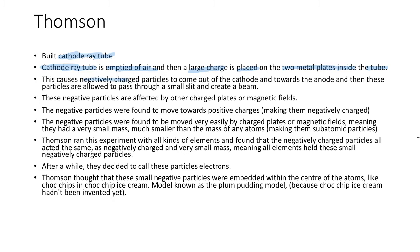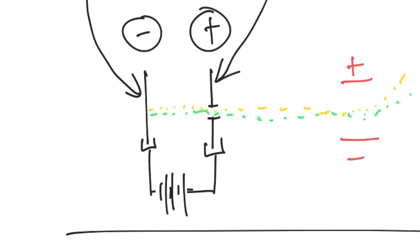This causes negatively charged particles to come out of the cathode, which is one of the metal plates, and towards the anode, which is the other plate. These particles are allowed to pass through a small slit and create a beam. Here we have the two charged plates — the anode is the positively charged one. Negative particles come out of the negative plate and towards the positive plate, because negative things are attracted to positive things. If you leave a slit in the middle, negatively charged particles can fly through it.